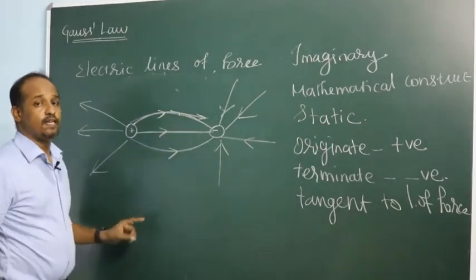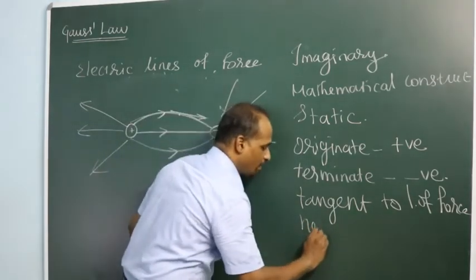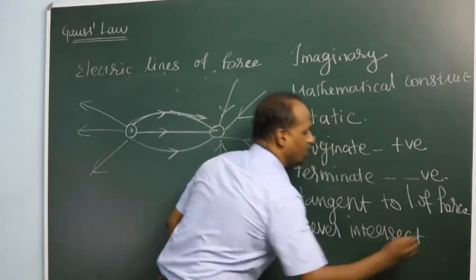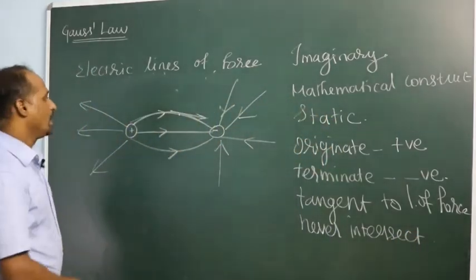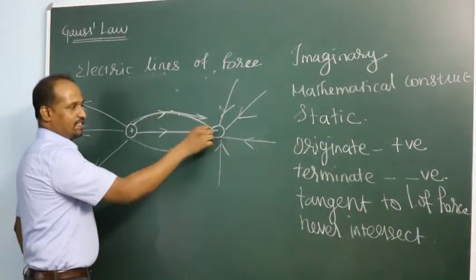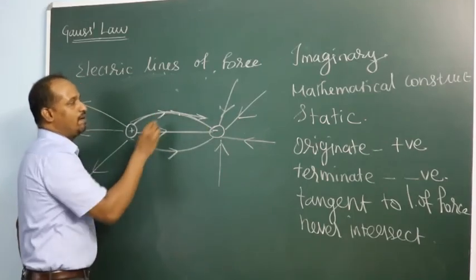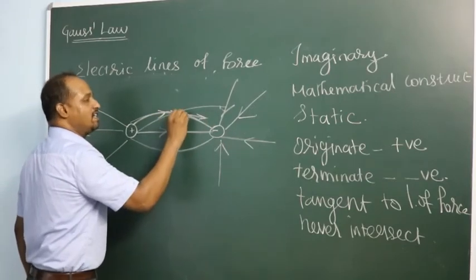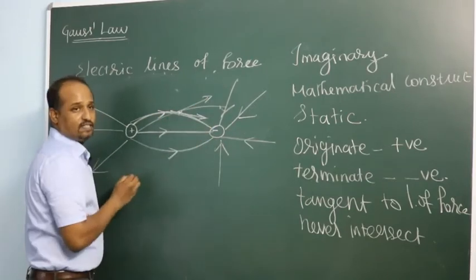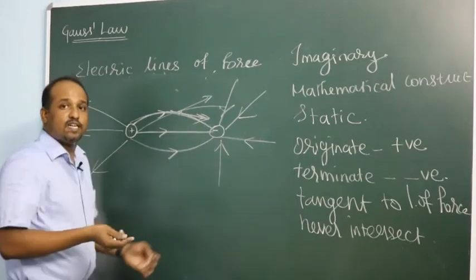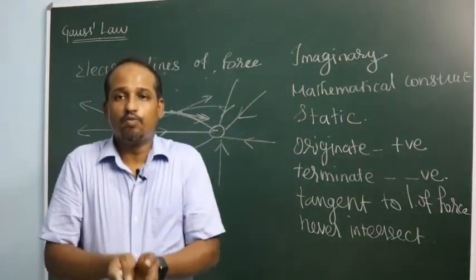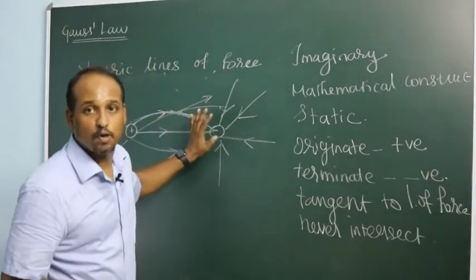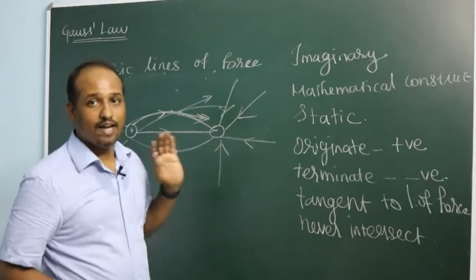Most importantly, lines of force never intersect. If two lines of force were to intersect, the tangent at that intersection point would have two directions, meaning the same charge would be trying to move in two different directions under the influence of one electric field — which is not possible. That is why lines of force never intersect.